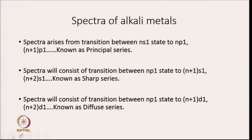Spectra arise from transitions between the Ns1 state and the Np1 state. The transition can happen from Ns1 to N+1p or Ns1 to N+2p1 state. Since the electron is finally ending up in the p level, the series arising from these transitions is called the principal series.